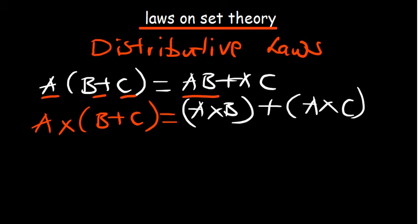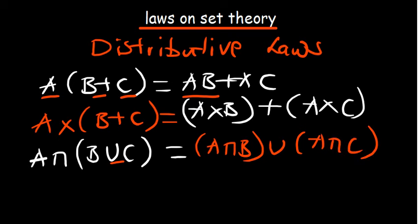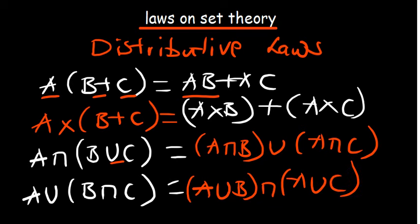The first distributive law is: A intersection (B union C) = (A intersection B) union (A intersection C) — intersection acts like multiplication here. The second distributive law is: A union (B intersection C) = (A union B) intersection (A union C). These are the two important distributive laws under set theory. Thank you.